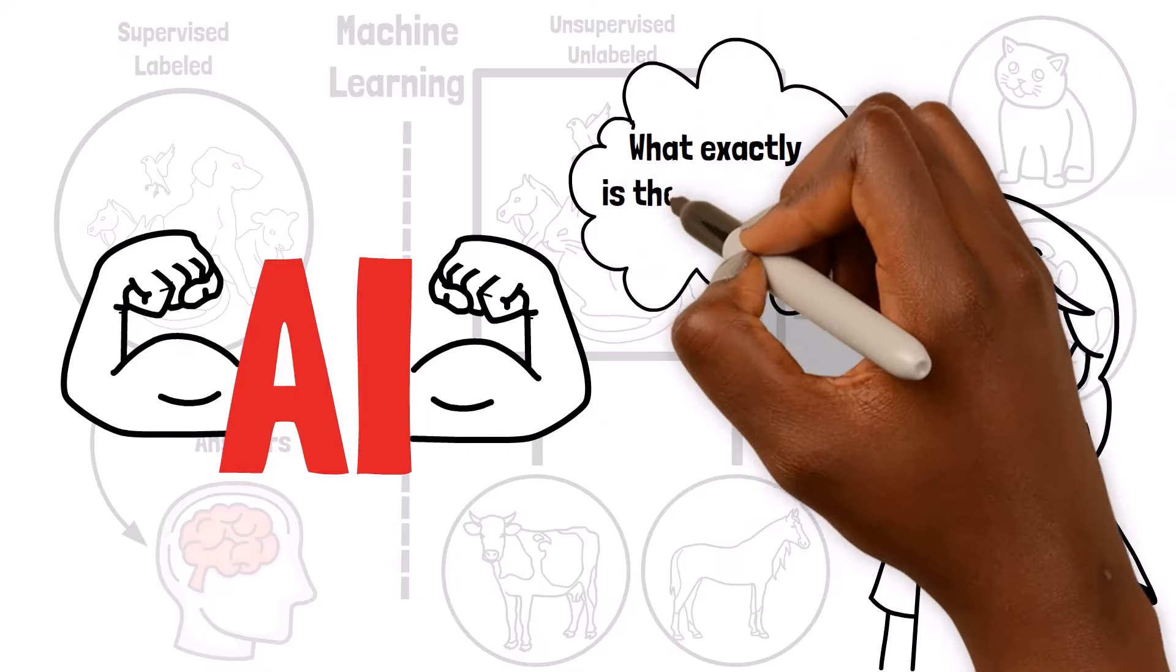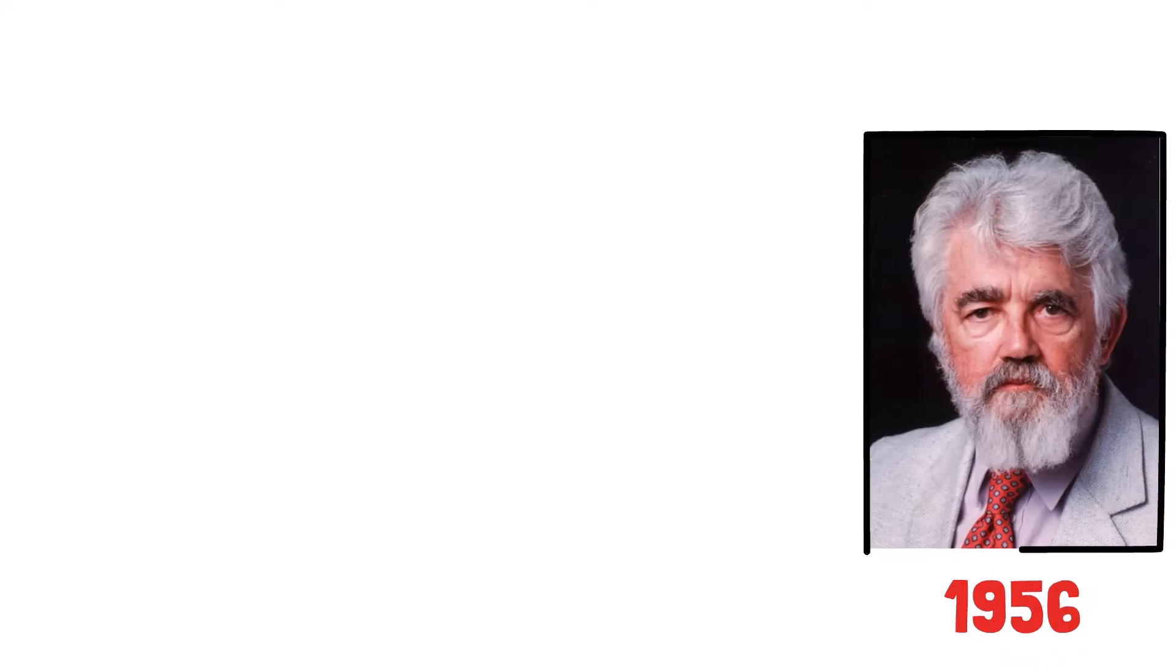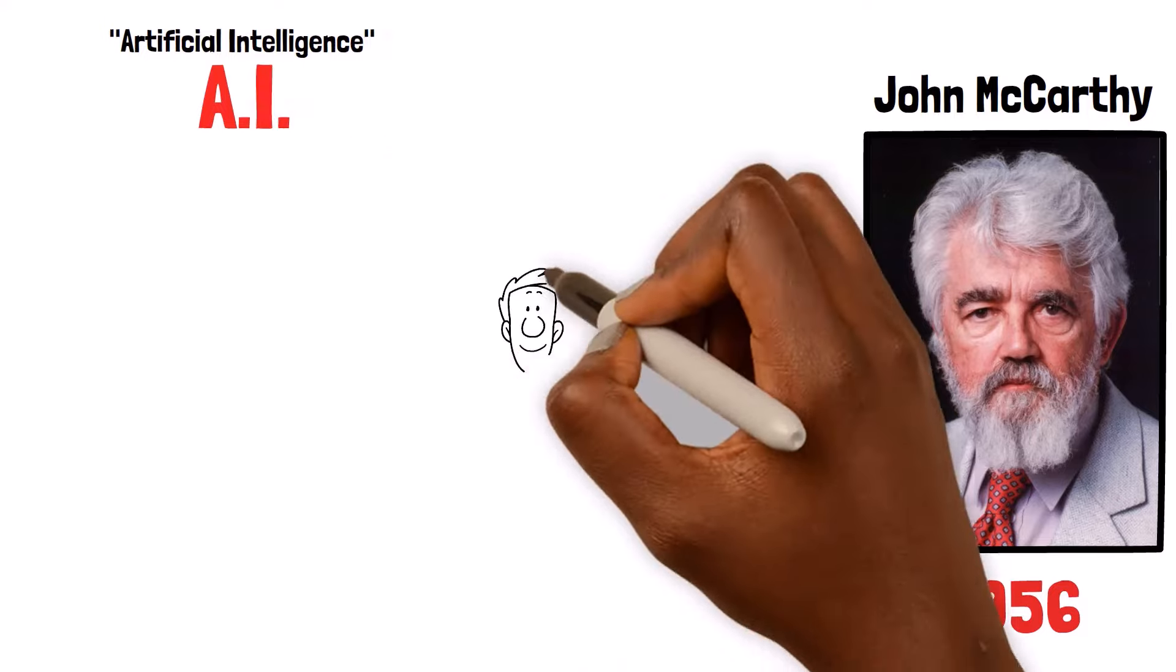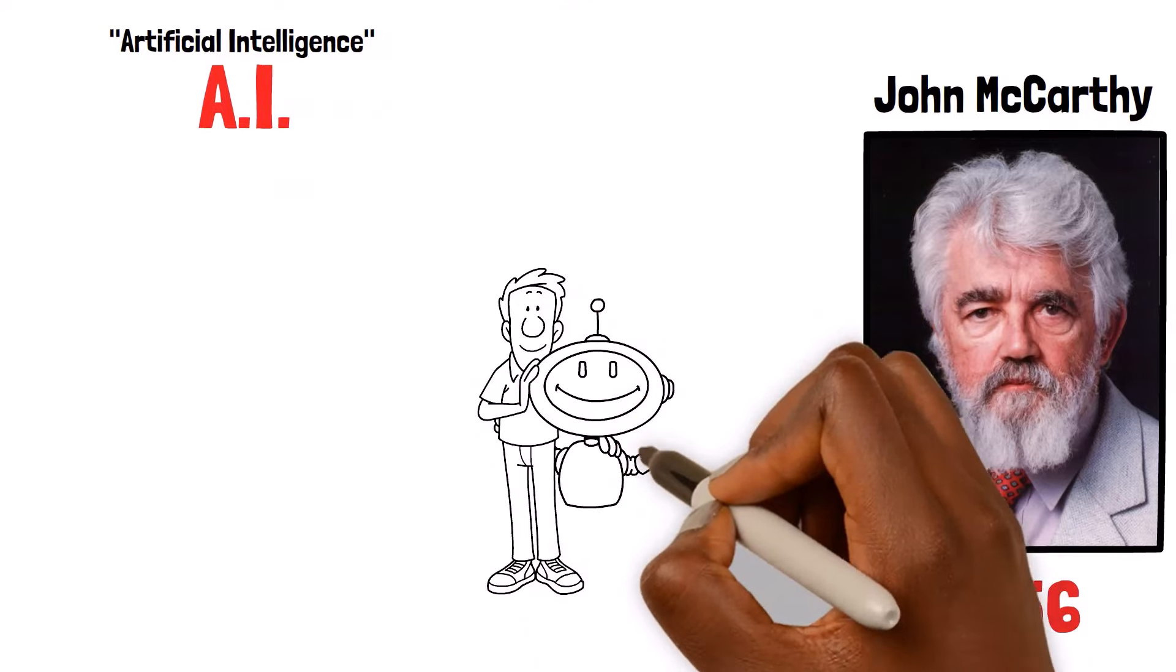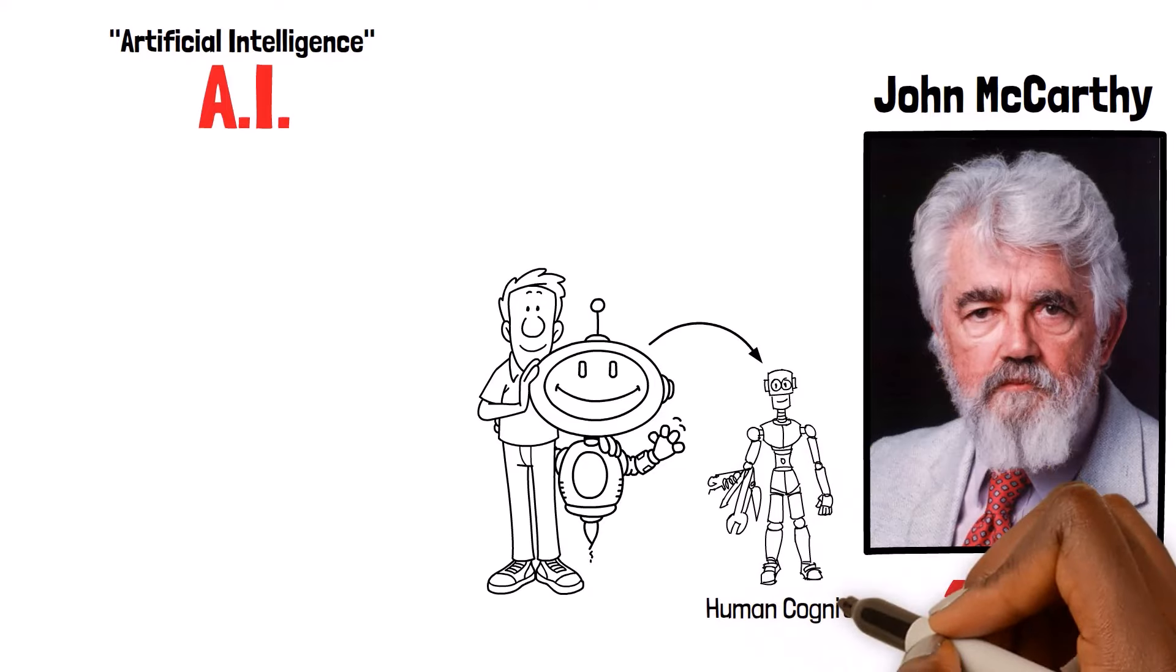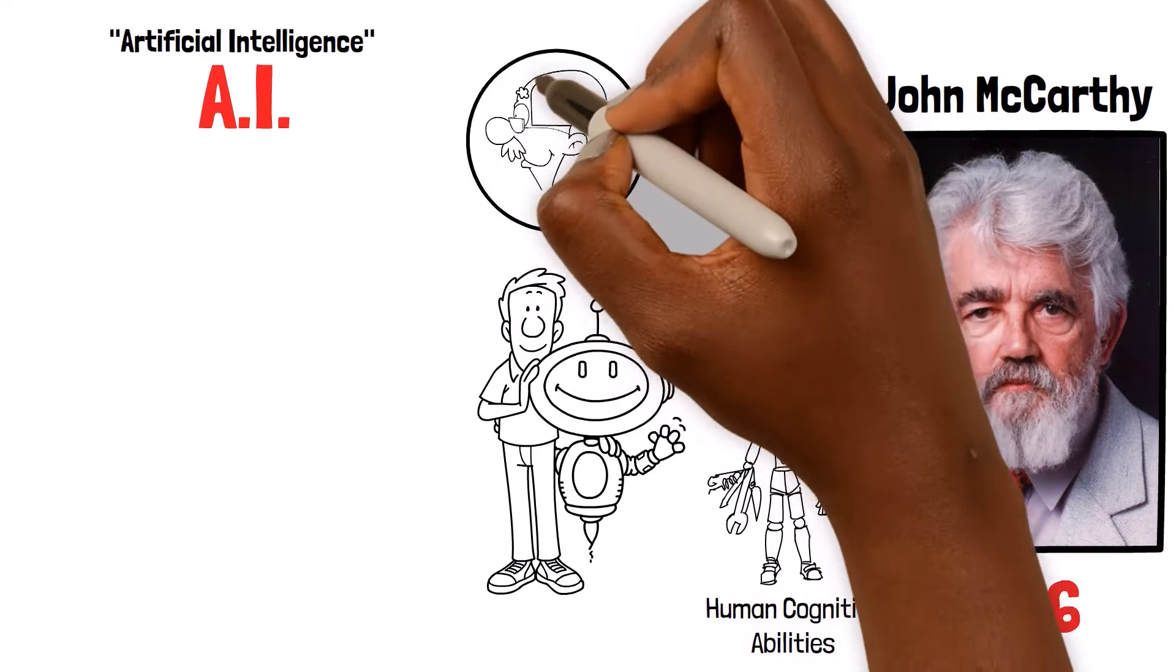But, what exactly is the goal of AI? Back in 1956, John McCarthy came up with the name artificial intelligence to describe a new field focused on creating machines that could mimic human cognitive abilities. For example,